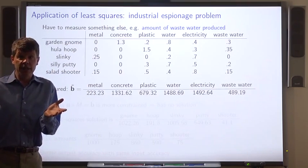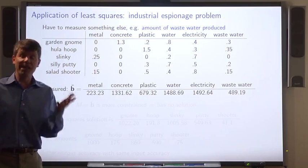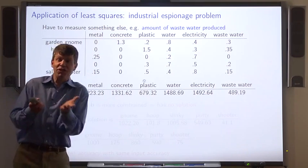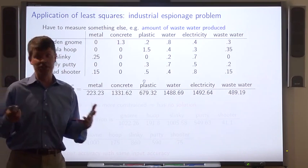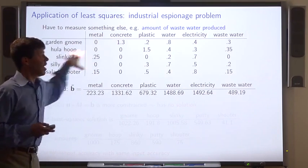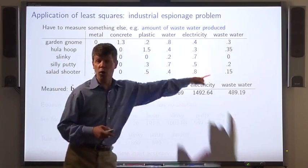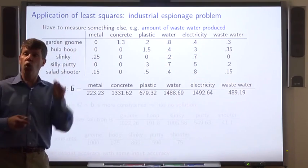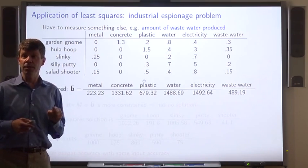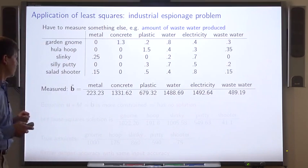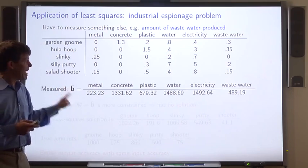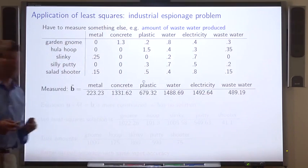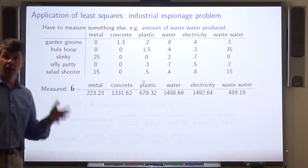So in this problem, we have to measure some other resource. This isn't really a resource, but let's say we could measure the amount of wastewater produced by this factory. So now we get a slightly bigger table with one more column. The new column tells us for each product how much wastewater is produced per item manufactured. Now our measurement has one more number, the total amount of wastewater that's produced by the factory.